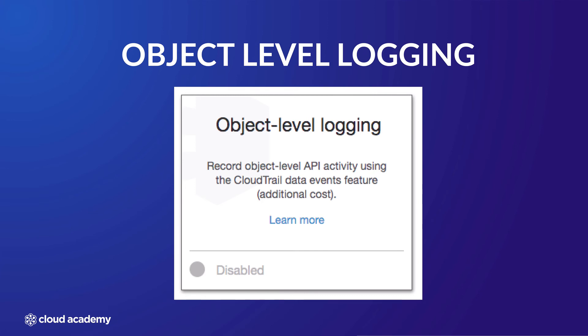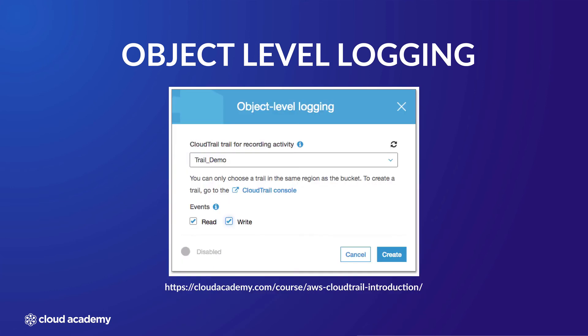Select the object level logging tile and this will present you with options to configure it. Due to its integration with AWS CloudTrail, you will be asked to select an existing trail from the same region to capture your S3 data events for this bucket. In this example, I've used my trail demo trail. You must also select which type of events you would like to capture, either just read events or write events or both. Once you have made your selection, simply select create and object level logging will be enabled, and AWS CloudTrail will capture any S3 data events associated with this bucket.